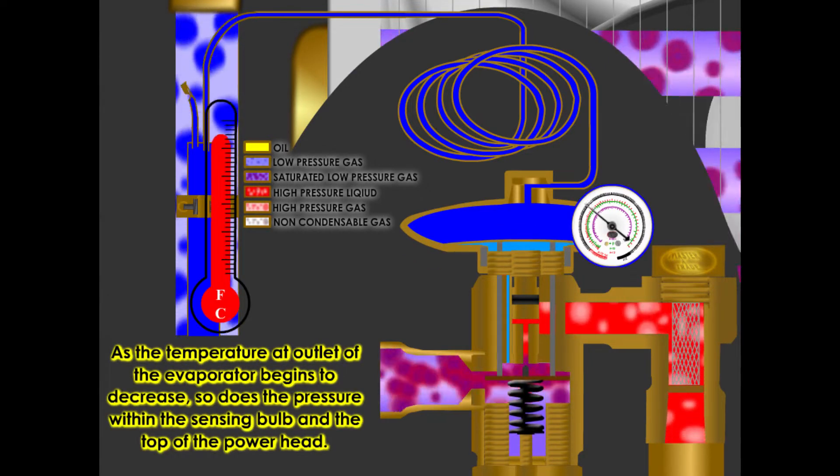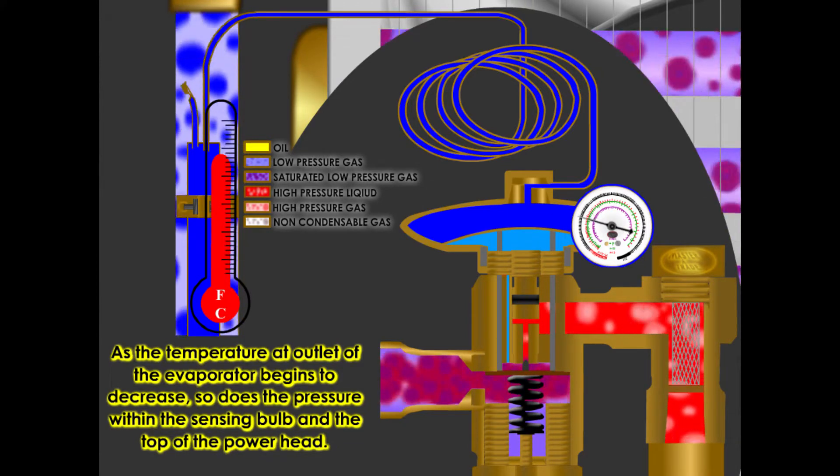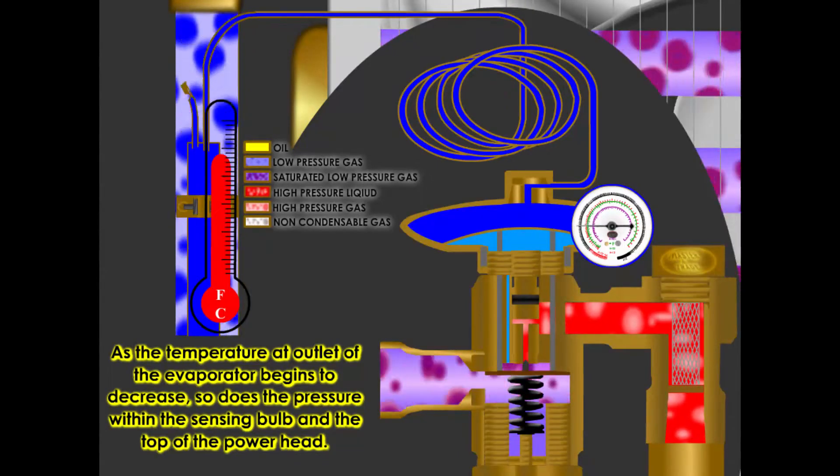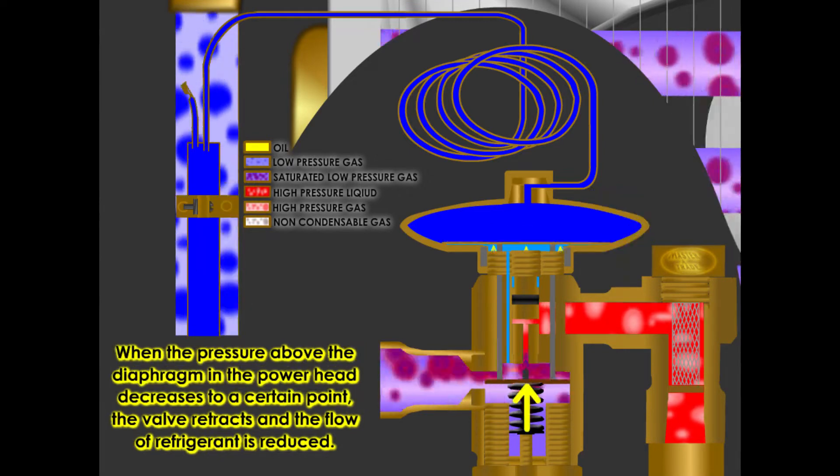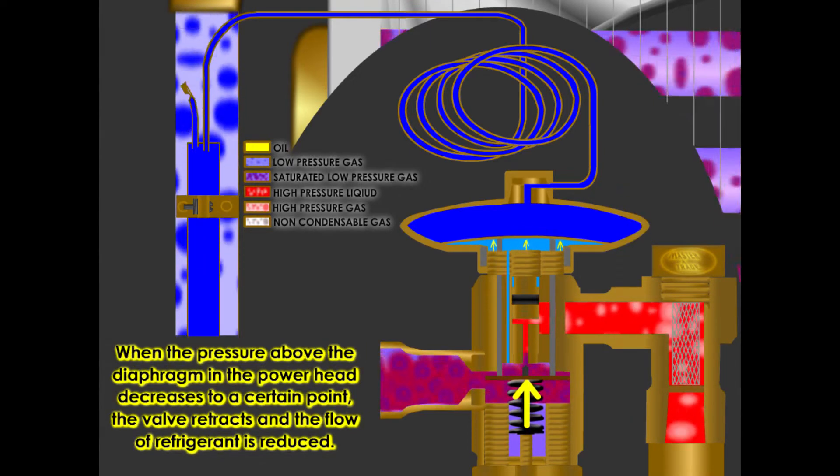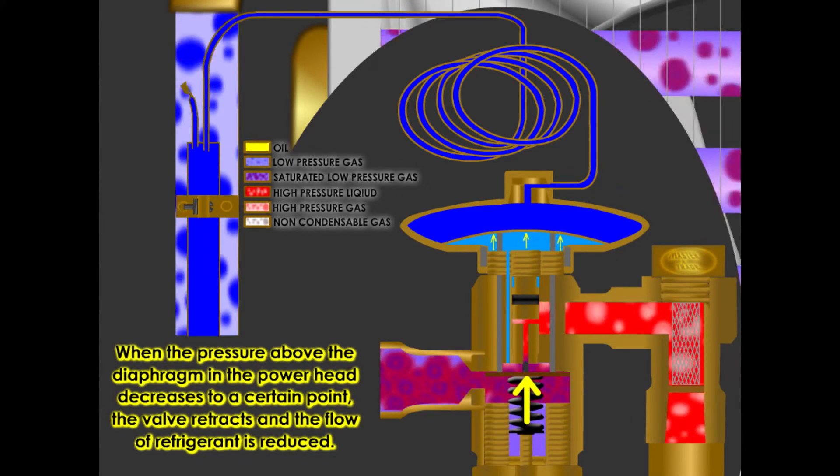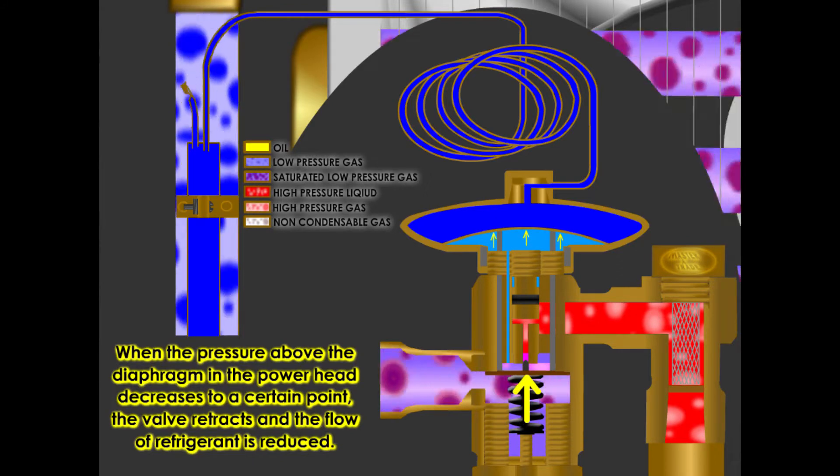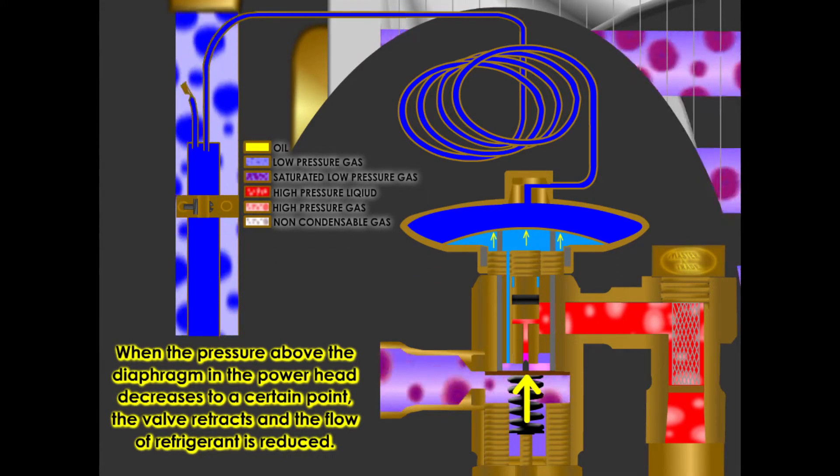As the temperature at the outlet of the evaporator begins to decrease, so does the pressure within the sensing bulb and the top of the power head. When the pressure above the diaphragm in the power head decreases to a certain point, the valve retracts and the flow of refrigerant is reduced.